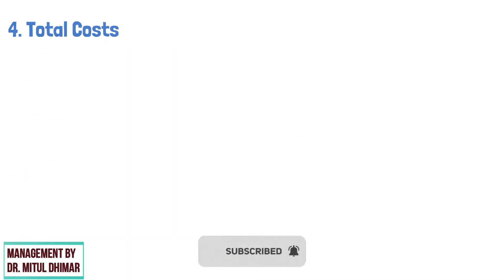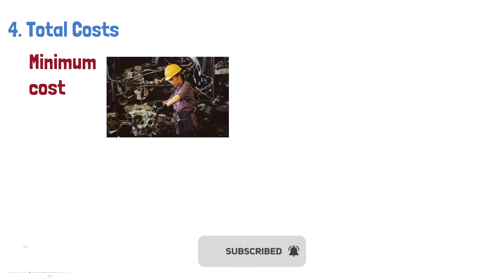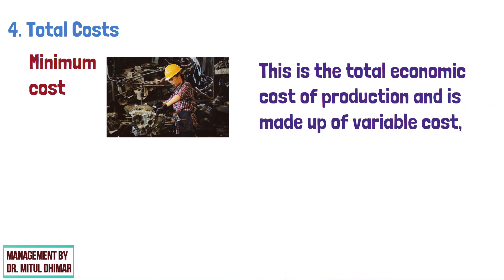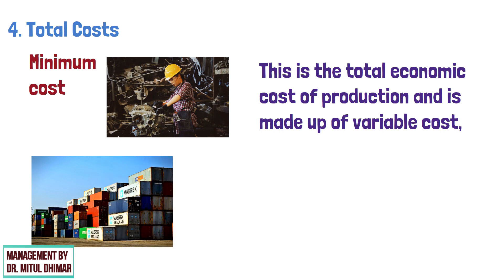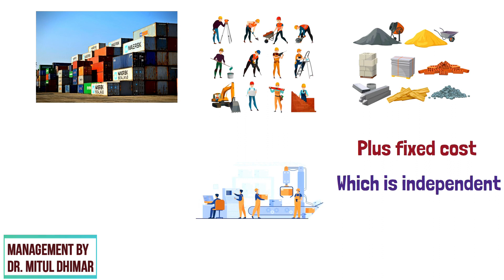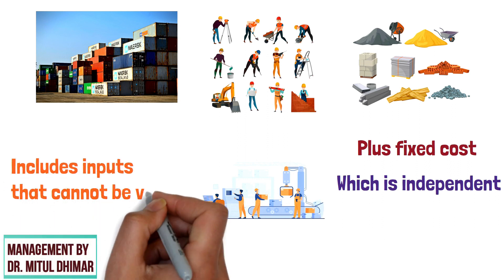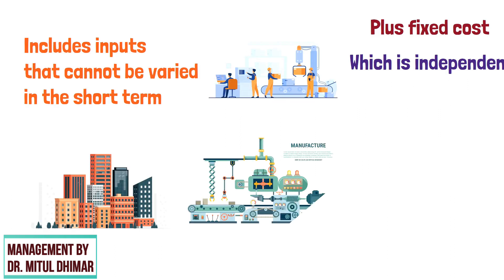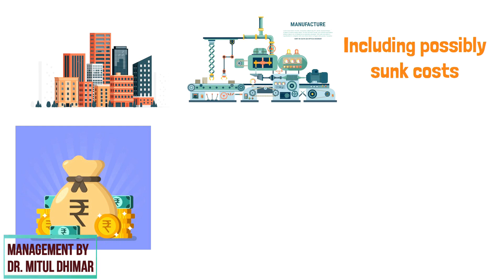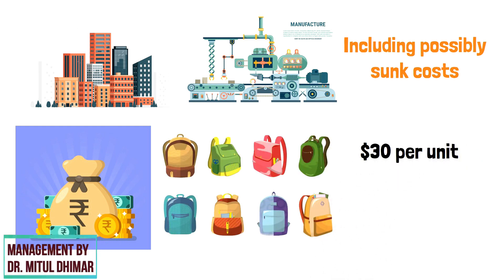Number 4: Total Cost. Total cost is the minimum cost of producing some quantity of output. It is the total economic cost of production, made up of variable cost — which varies according to the quantity of a good produced and includes inputs such as labor and raw material — plus fixed cost, which is independent of the quantity produced and includes inputs that cannot be varied in the short run, such as building and machinery, including possibly sunk cost. For example, if a firm has a fixed cost of producing bags at $30 per unit and a variable cost of $5 per unit, as they increase their output, the total cost will be $35.